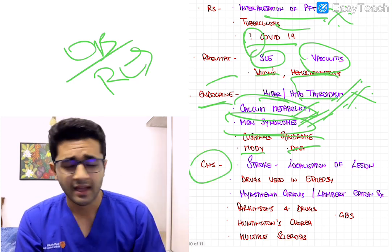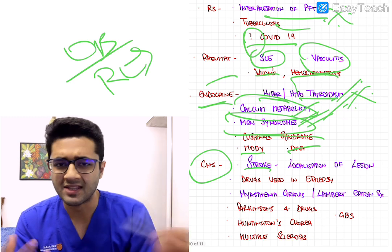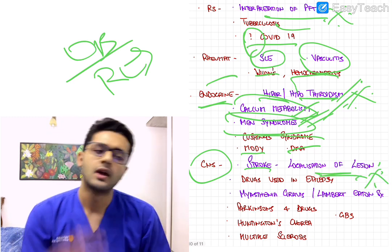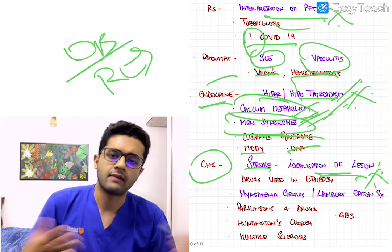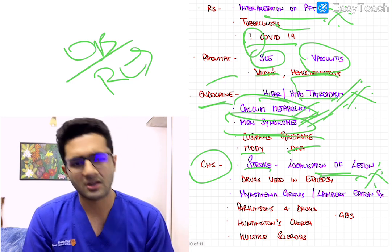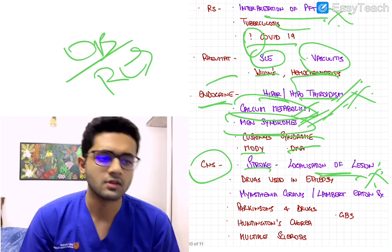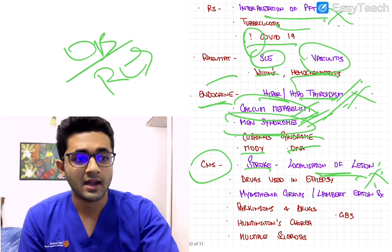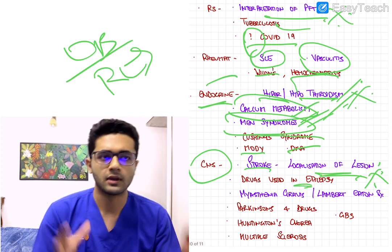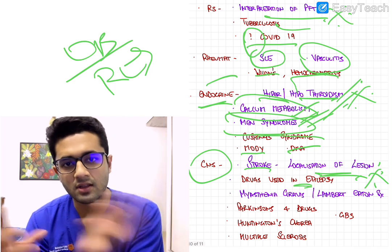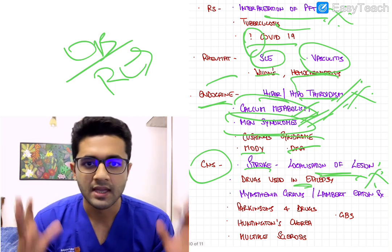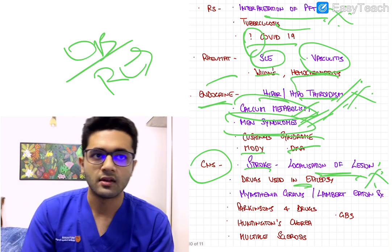In CNS, stroke is the key topic — specifically localization of lesion, which is frequently asked. Learn really well how to localize lesions; I've already made videos simplifying that topic. Brain stem syndromes are also important and can be asked. Drugs used in epilepsy are super important — more than the pathogenesis of epilepsy, you should know which drug is used in which type. Understanding anti-epileptic agents is very important and also integrates with pharmacology.